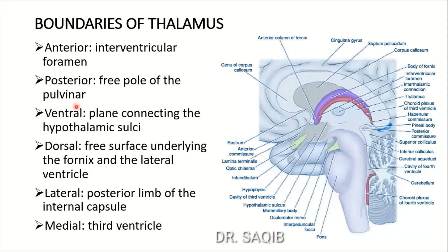Ventrally, the boundary of the thalamus is a plane connecting the hypothalamic sulci - this is the hypothalamic sulcus and there's a plane that forms the ventral boundary of the thalamus. Dorsally, the free surface underlies the fornix and the lateral ventricle. Here you see this is the body of the fornix, and the dorsal surface of the thalamus is formed by the free surface underlying the fornix and the lateral ventricle.